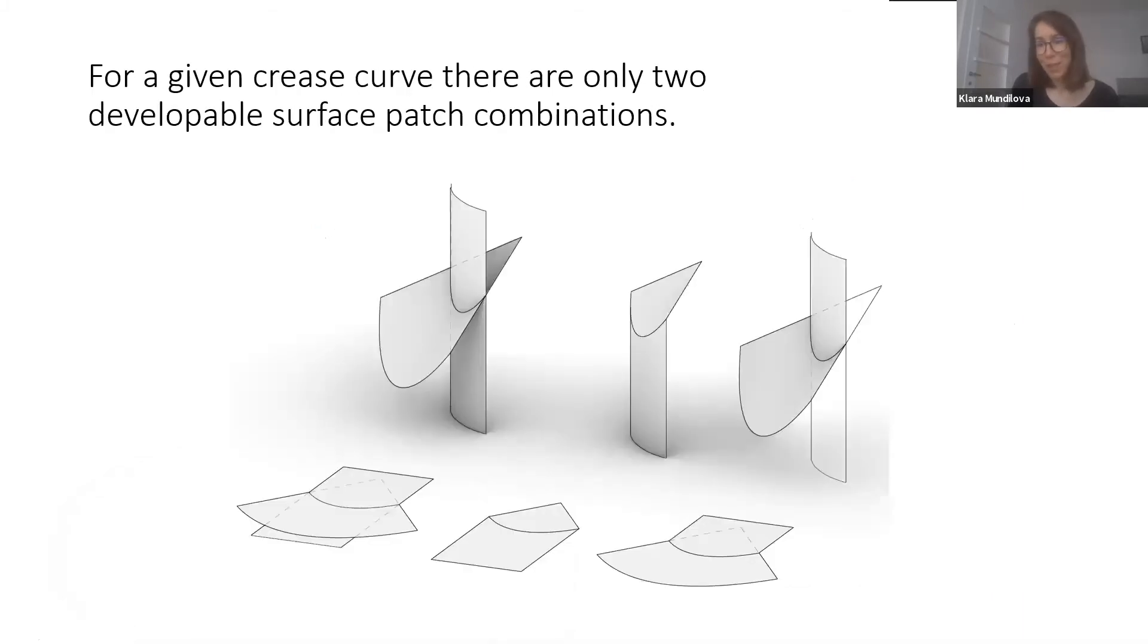But unfortunately, that's not all. If we consider the crease that we computed, there are actually four involved surfaces: two coming from the cylinder and two coming from the cone. There are two choices that we can make to get developable surfaces. In this configuration, we could choose the lower cylinder and the part of the cone which contains the apex to get a developable configuration, or the part that doesn't contain the apex and the upper part of the cylinder.